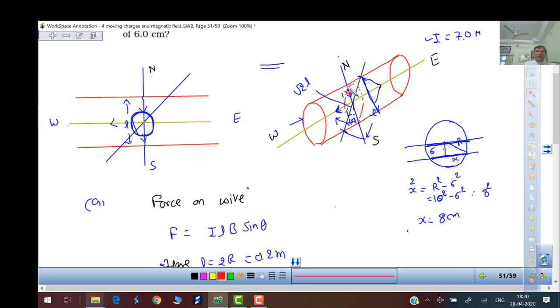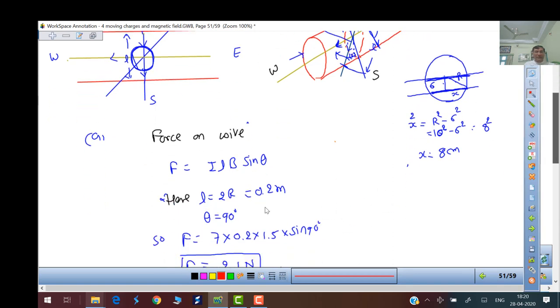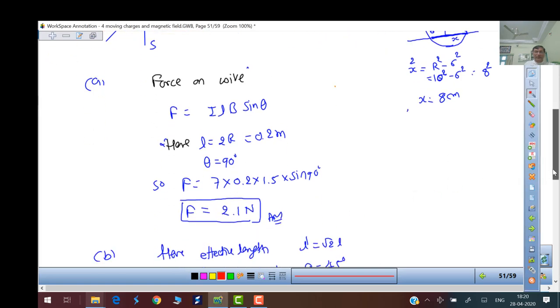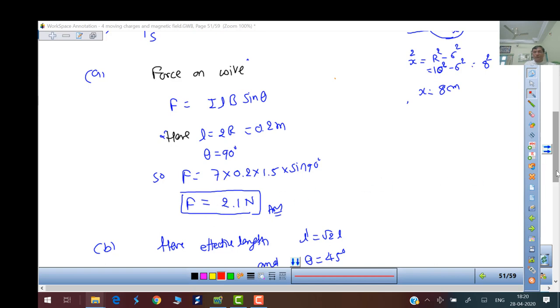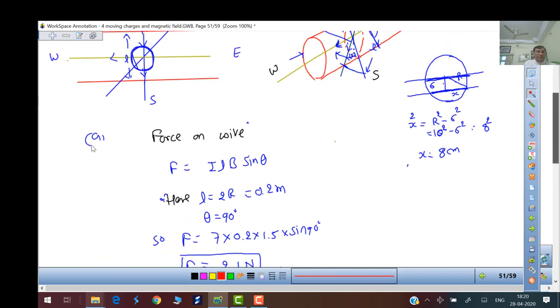Why is the wire? How much part of the wire is inside the magnetic field? That is our effective length. From this point to this point, it shows a diameter. So length must be diameter. Diameter is 2R. You have given radius, so diameter is 0.2 meters. Force when it is north to south: I L B sin 90 is 1, so we get 2.1 Newton. In condition A, force is acting 2.1 Newton.